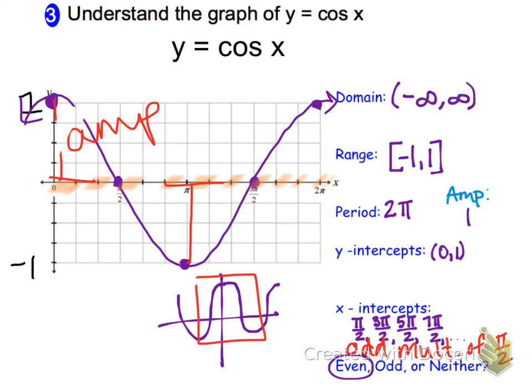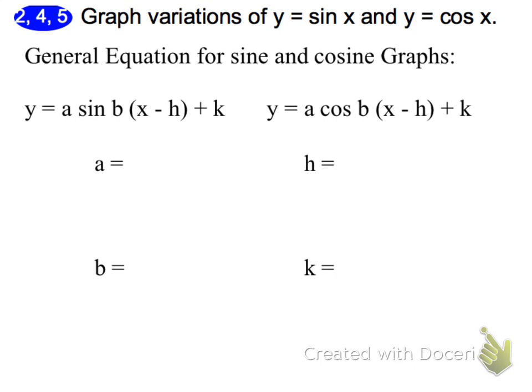The last thing I'd like to do in this video is take a look at the general equations for sine and cosine graphs, because we will be shifting these graphs around. And so you can see that we have the same equation here. The only difference would be the sine versus cosine. And let's talk about what each of these letters is going to do for us.